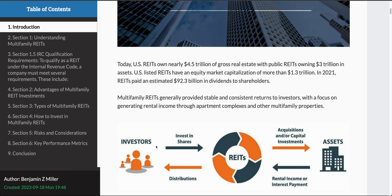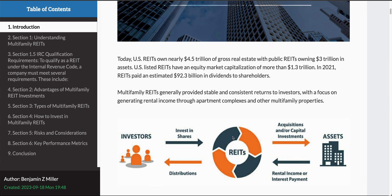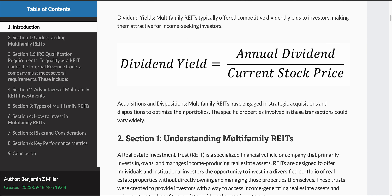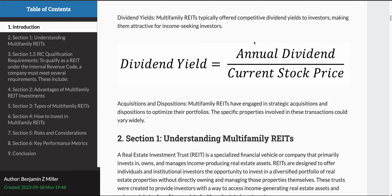The process is: investors purchase shares in REITs. The REITs acquire multifamily assets and collect rent — it's a property management company normally that collects the rent, but that rent goes back to the REITs, and then the REITs do distributions to the shareholders. One of the important metrics with REITs is the dividend yield, where you take the current stock price and in the numerator you have the annual dividend, and that gives the dividend yield. It's an important metric in REIT investing.